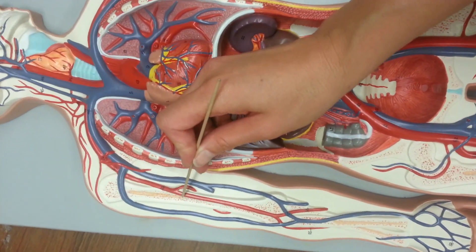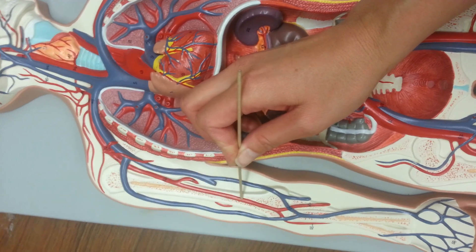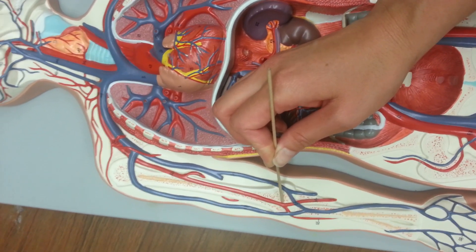Then we can keep continuing down to the brachial artery, and the brachial artery is going to supply the rest of our arm.